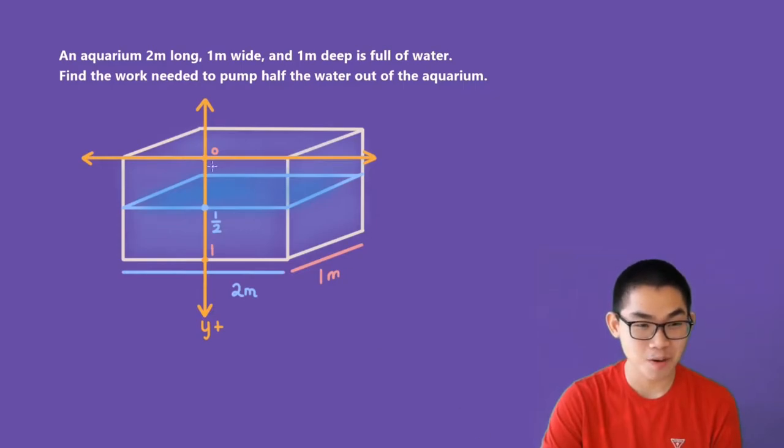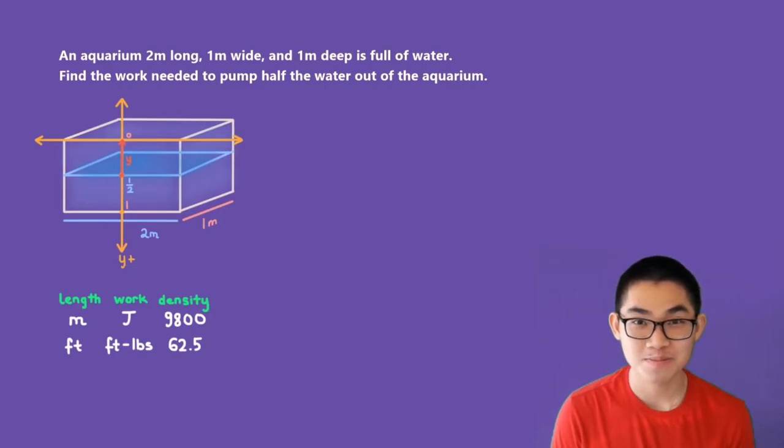The problem wants us to pump all the water from 0 to 1 over 2 because that's the same as pumping out half the water in the aquarium. Now, you can imagine that from 0 to 1 over 2, there are many layers of water like this one. I'm not going to draw all the layers, but you can imagine that there are many layers. What we're going to do is pull up each layer of water to the top. The distance that we're pulling each layer of water can be called y.